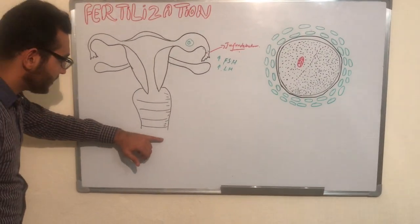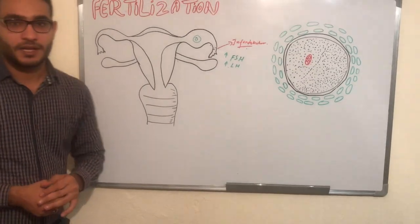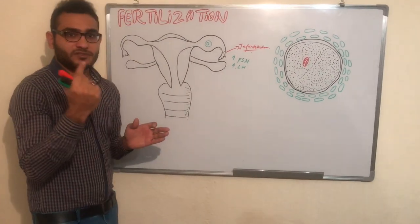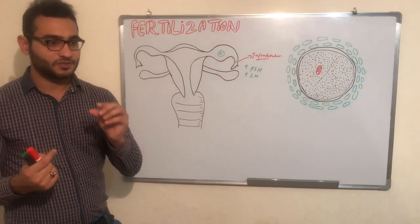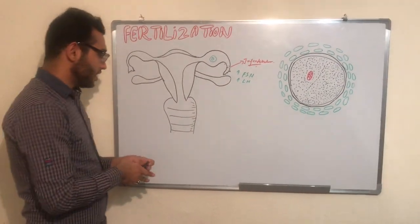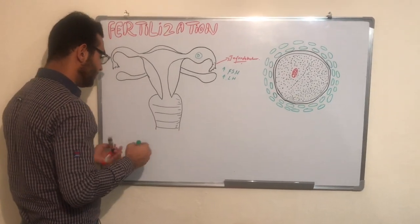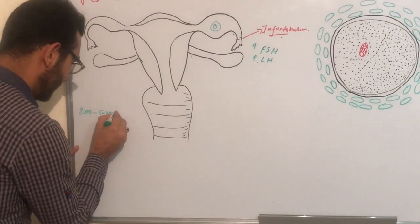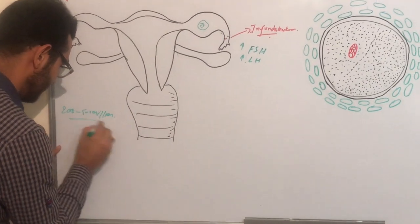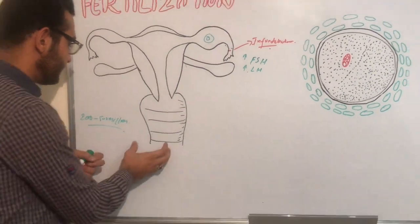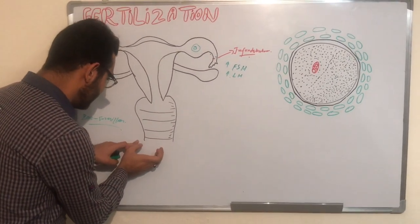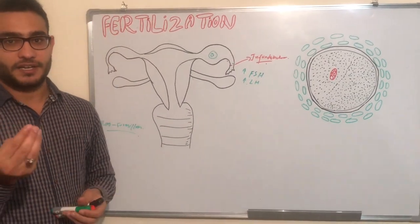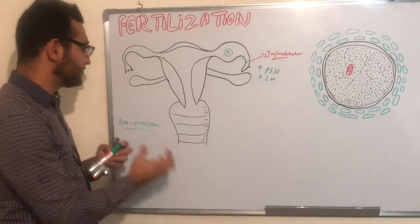Now we will discuss the sperm. At the time of ejaculation, 200 to 500 million sperms are ejaculated in one ejaculation period. In one ejaculation, only 10% of the semen is composed of sperm.